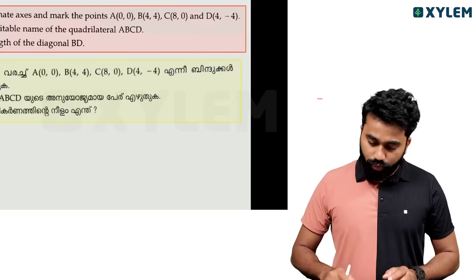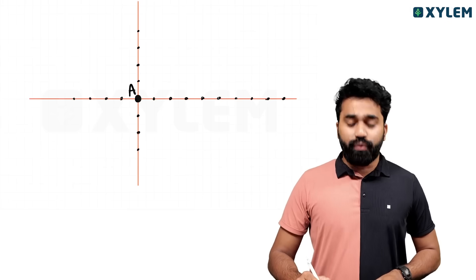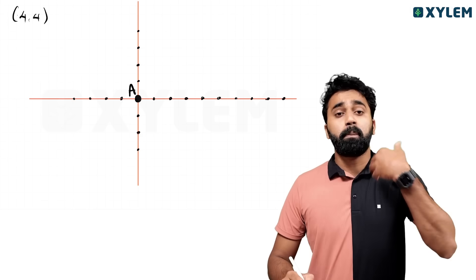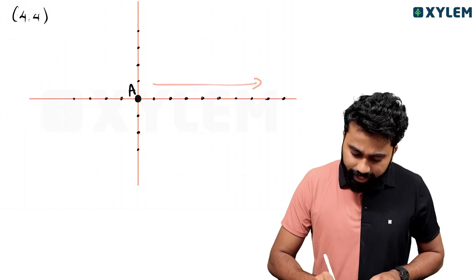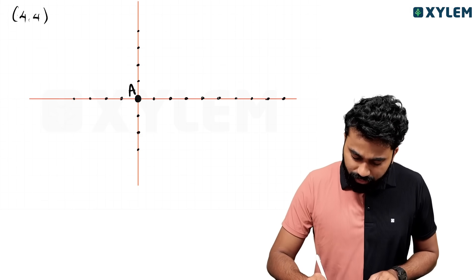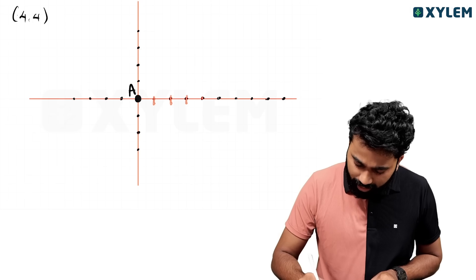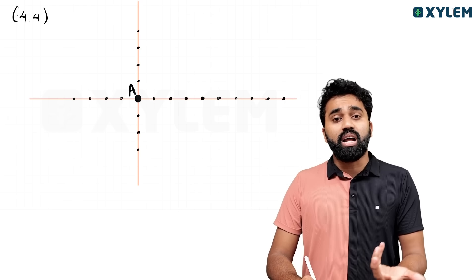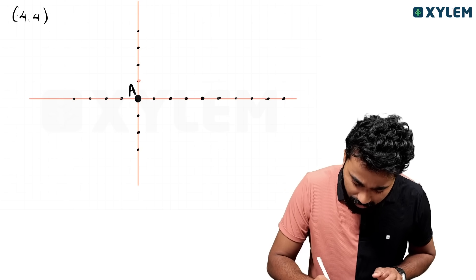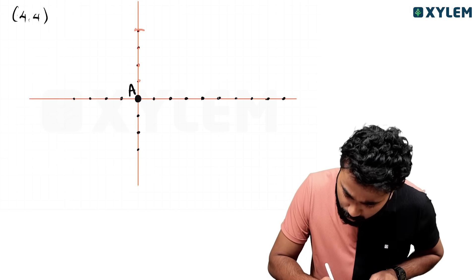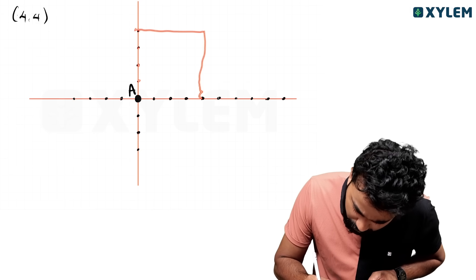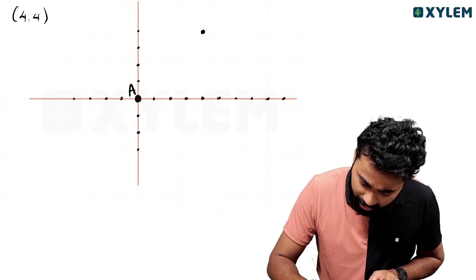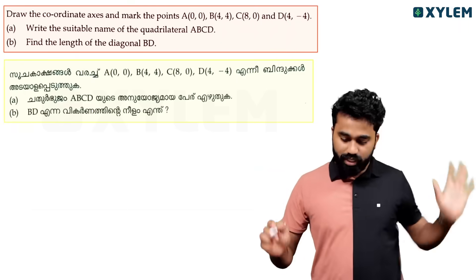Point B is at (4,4). The coordinates are x and y. So this is B(4,4) — very simple.